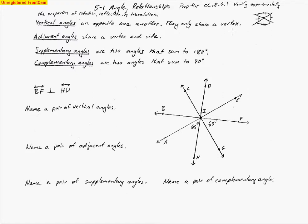Adjacent angles are ones that are next to one another. So if I draw an angle like that, this one here would be adjacent — they both share this side right here. So these two angles are adjacent to one another.